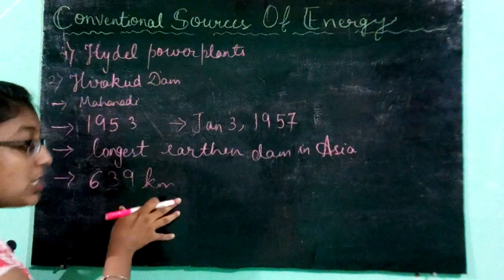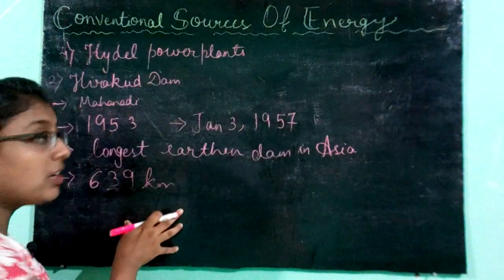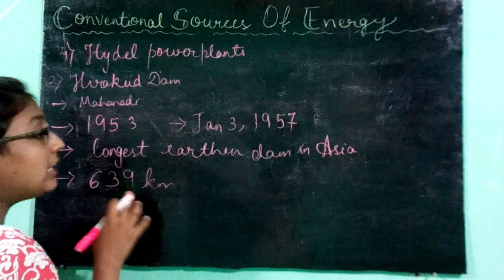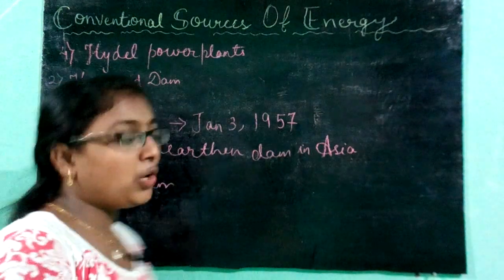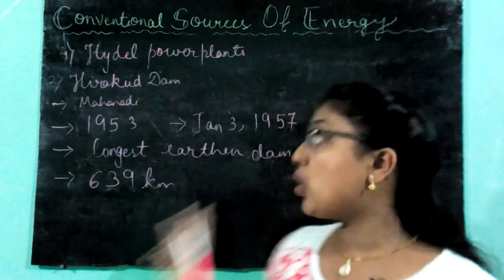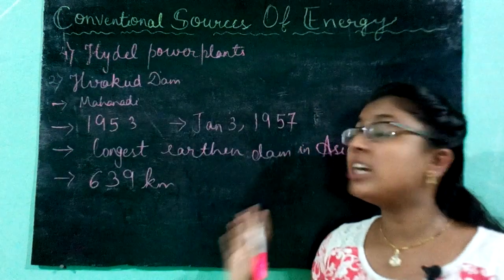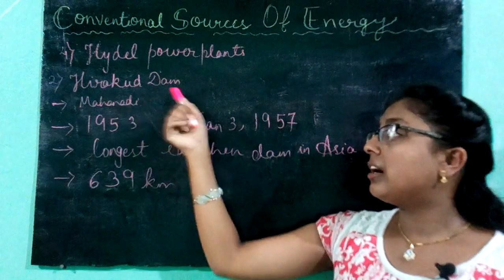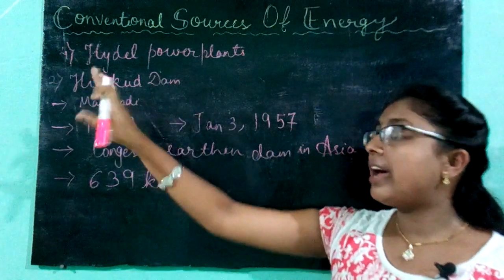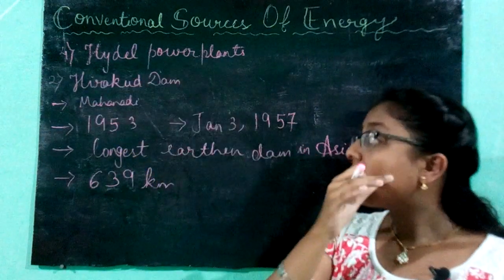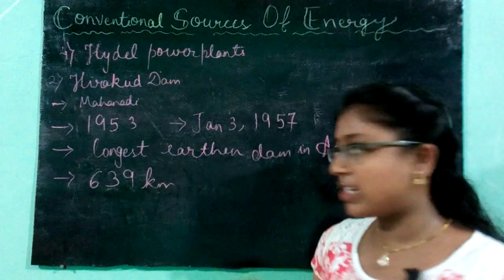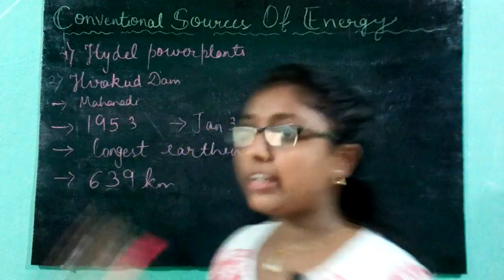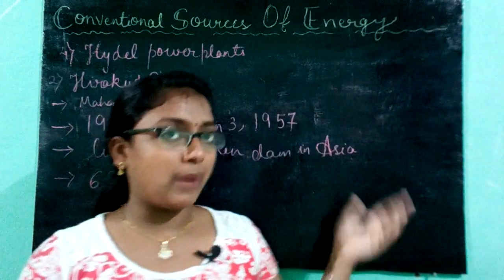It has a shoreline of 639 kilometres. Around the Hirakud Dam, there are two observation towers — one at Hirakud and the other at Burla.